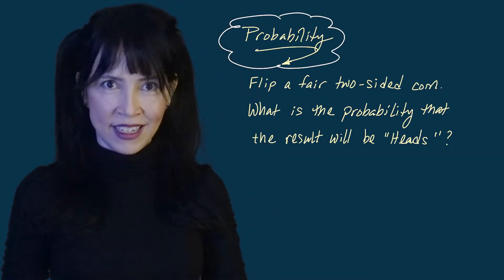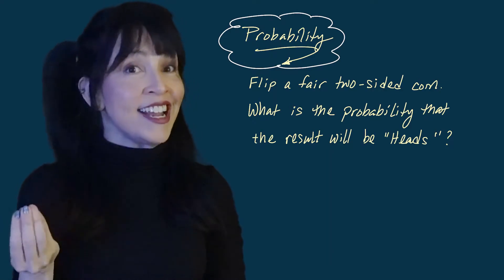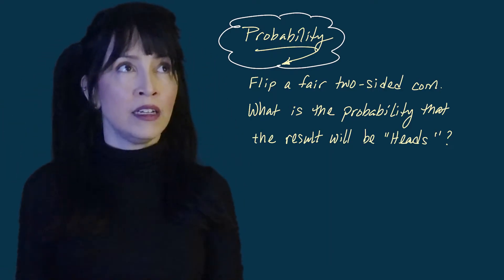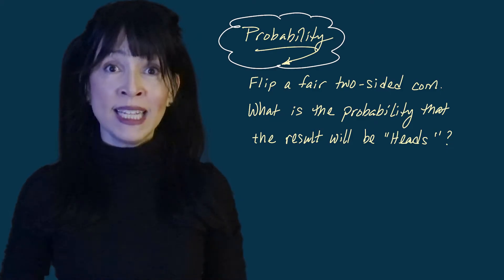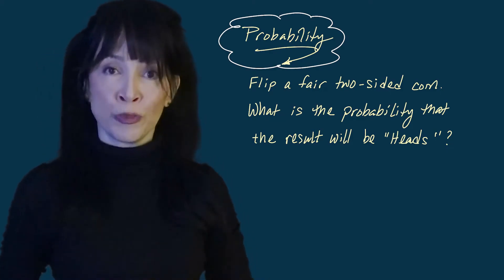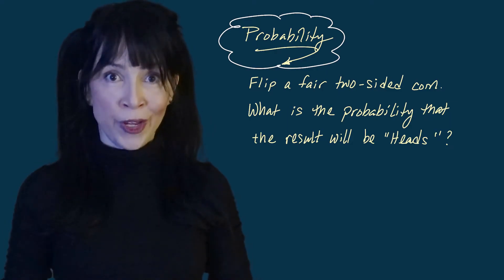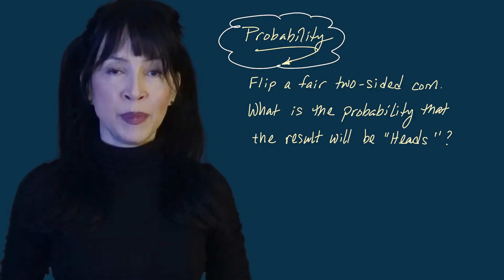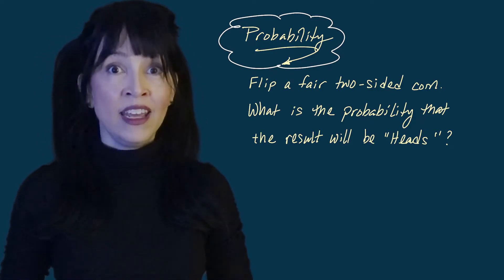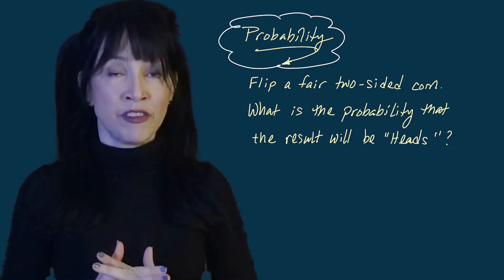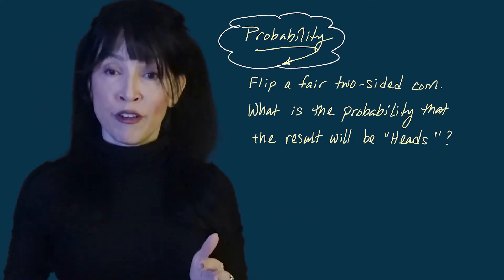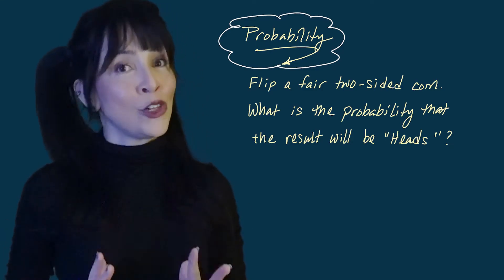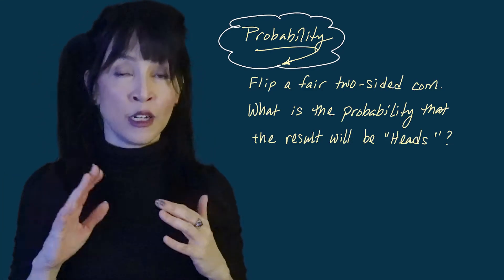I'm hoping you have a really basic sense of what probability is. Let's flip a fair two-sided coin — heads and tails — in a random way, not with a spatula. We're going to flip it once. What is the chance or probability that you will see heads? The answer is one half, because if you flip the coin over and over again, you will see heads approximately half the time, and it gets closer and closer to one half as the number of flips increases.